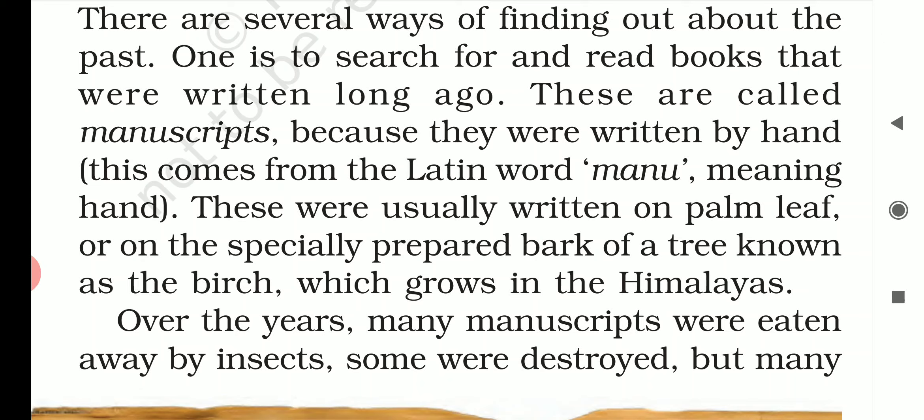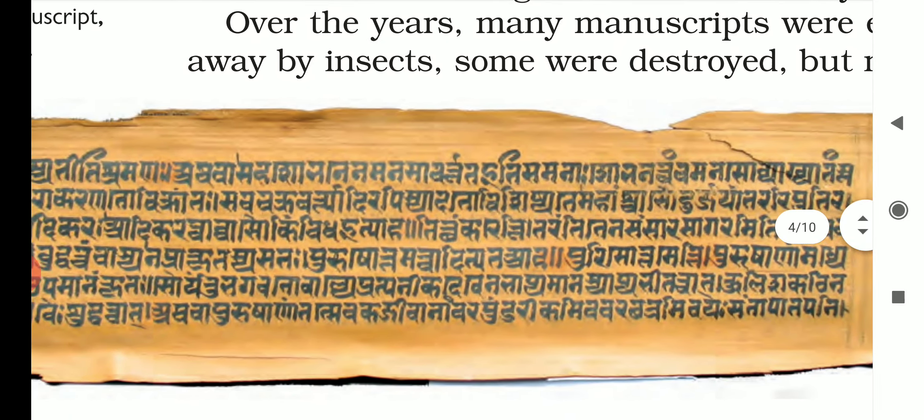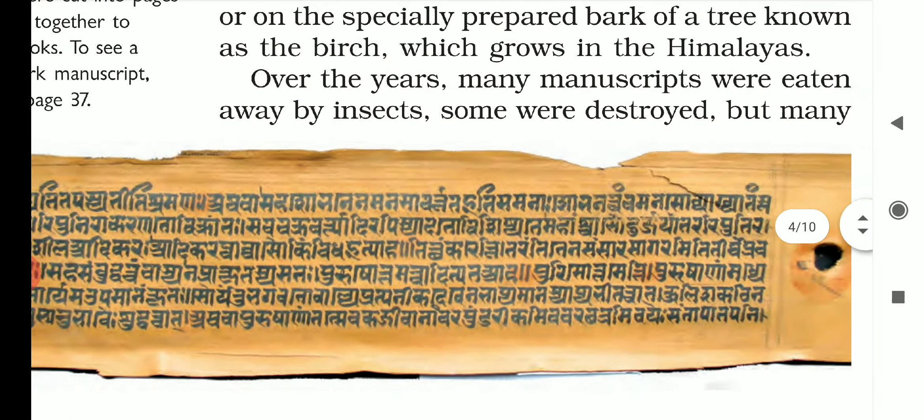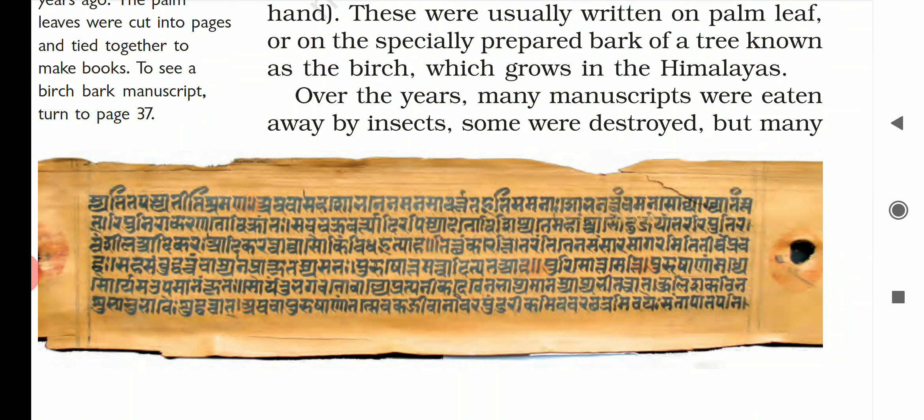Manuscripts were written by hand on palm leaves or dried bark. Over the years, many manuscripts were eaten away by insects — just as old food grains are eaten by insects today. Some have been destroyed, but some have survived. Here is an example of a manuscript written on a palm leaf in Sanskrit.